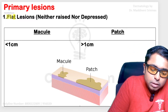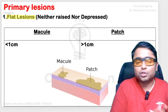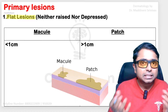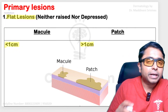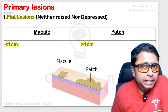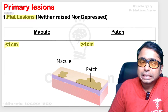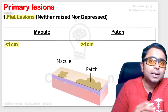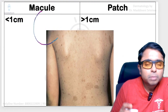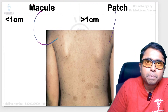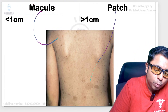To understand macule and patch, you should know that these are flat lesions which are neither raised nor depressed. Depending upon the size, if the lesion is less than one centimeter, we call it a macule, and if it is more than one centimeter, we categorize them as patches. Because they are neither raised nor depressed, they will be hyperpigmented or hypopigmented. In the next image, you can see these are all macules which are less than one centimeter, and this is a patch which is obviously more than one centimeter in size.